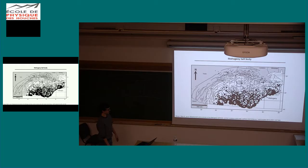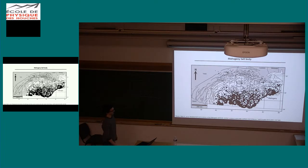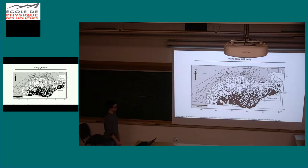The Mahogany salt body is located in the Gulf of Mexico. Here you have an overview of the northern part of the Gulf of Mexico — all the black areas are salt, and you can also see some faults. The Mahogany salt body is indicated with the gray arrow on the right side. The Gulf of Mexico has been an extensively studied area because of many oil and gas discoveries.